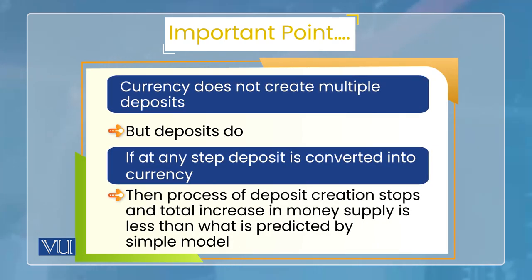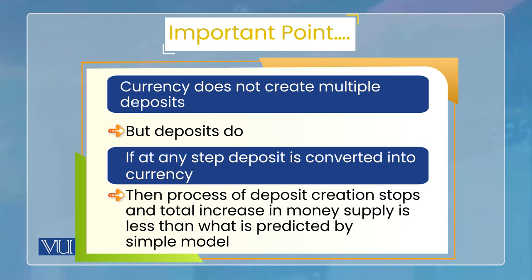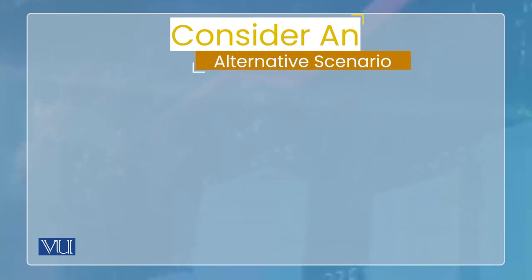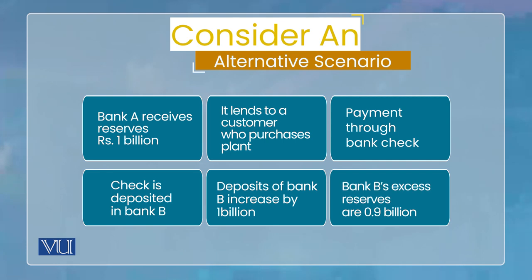Note that the monetary base has two parts: currency and reserves. Currency cannot create multiple deposits — because currency in circulation means it is held by the non-bank public, so how would the bank create deposits from it? This means that at any step of multiple deposit creation, if currency is withdrawn and reserves get converted into currency, the multiple deposit creation process stops right there.